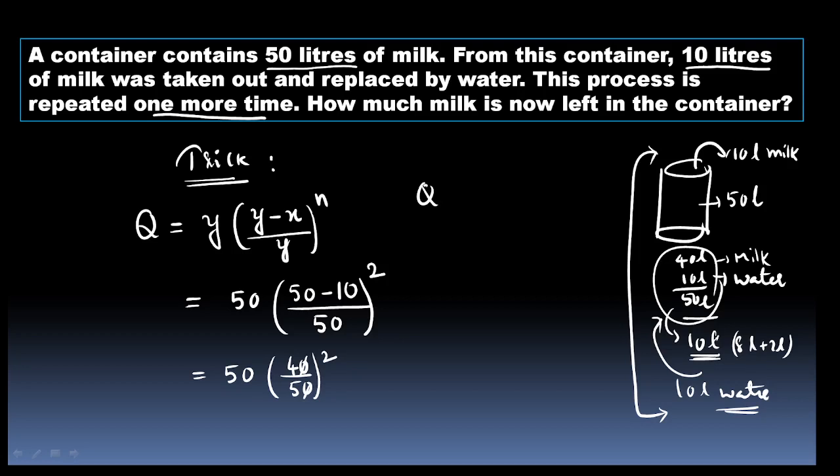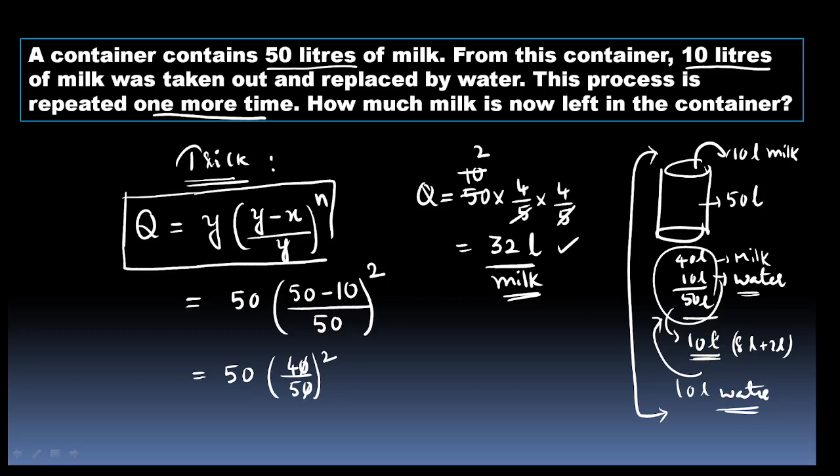Cancel, so quantity of milk left in the container is 50 into 4 by 5 squared. 4 by 5 into 4 by 5 whole square - 4 times 4 is 16, 16 into 2 is 32. So 32 liters of milk remains, total 50 liters.